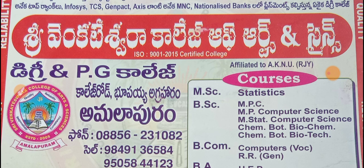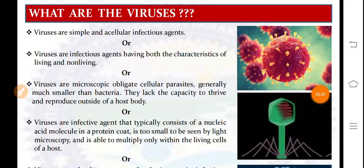We have many types of definitions for viruses. We can simply say that these are simple and acellular infectious agents. That means there is no particular cell for these viruses, and they cause infection whenever they enter a human body, animal cell, or a plant cell. So, viruses are simple and acellular infectious agents.